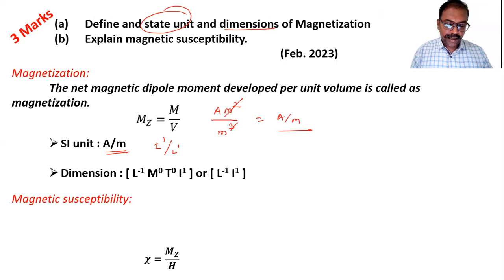You can see, so this is dimension, or you can write L raise to minus one M zero T zero I raise to one. So anyway you can write, M raise to zero and T raise to zero is one. Now next one is magnetic susceptibility.